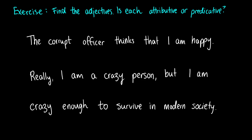Okay now let's take a look at a sentence and let's try to find our attributive and predicative adjectives. So I'll read this out loud and then we'll start identifying our adjectives and labeling them. The corrupt officer thinks that I am happy. Really, I'm a crazy person. But I'm crazy enough to survive in modern society. You can pause the video and find these if you want. Okay, let's go. So first of all, the corrupt officer. Well, officer is a noun. Corrupt is describing the officer. And it's appearing right before the word officer. So this is an attributive adjective.